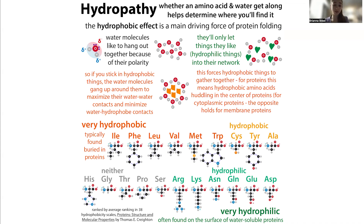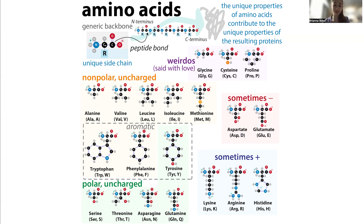Valine is not the only hydrophobic amino acid. If you look at the chart of amino acids, you can see that there are a number of these that have in common that they have hydrocarbon side chains. There are also some, like valine, that have that kind of branching structure.